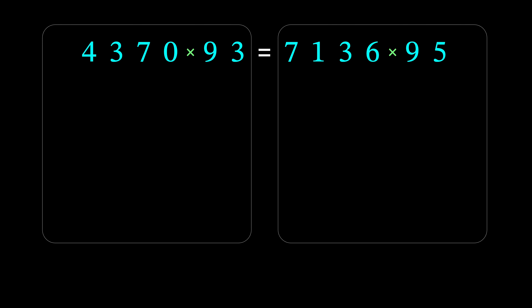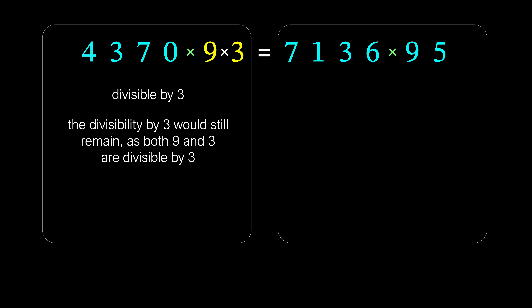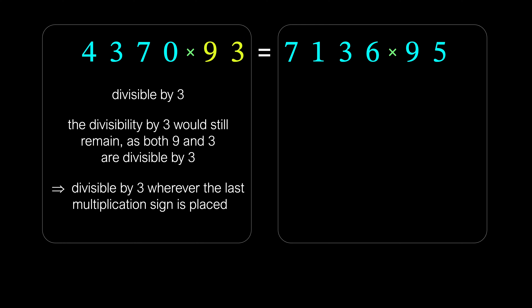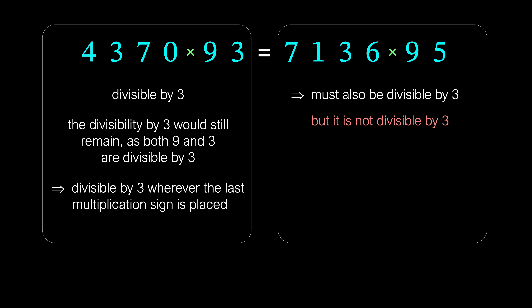What about the third multiplication sign? What else can we notice to avoid checking all possible options? We can notice that the number on the left is divisible by 3, because 9 and 3 are both divisible by 3. Even if we placed a multiplication sign between 9 and 3, the divisibility of the number on the left by 3 would still remain. Wherever we place the last multiplication sign, the number on the left will always be divisible by 3. This means the number on the right must also be divisible by 3, but at the moment it is not.